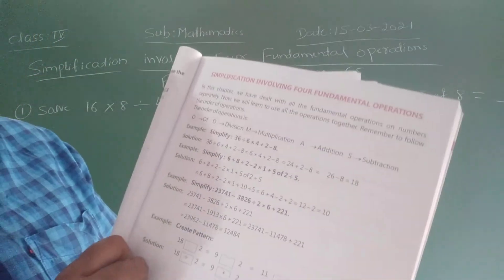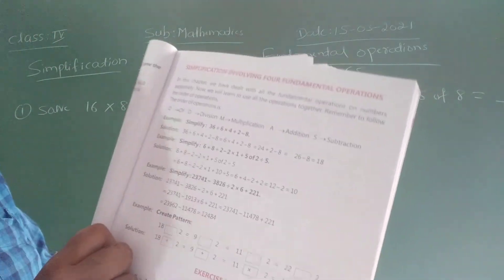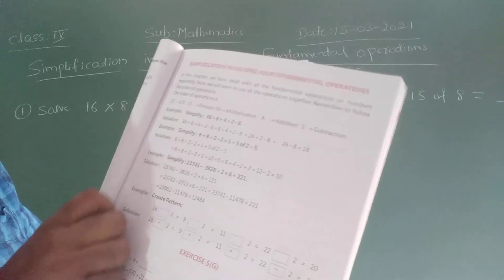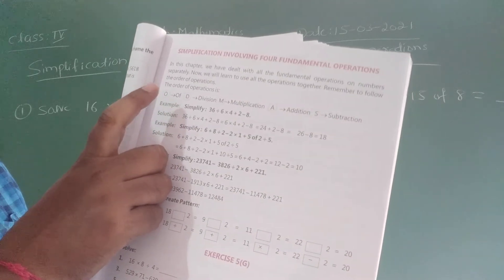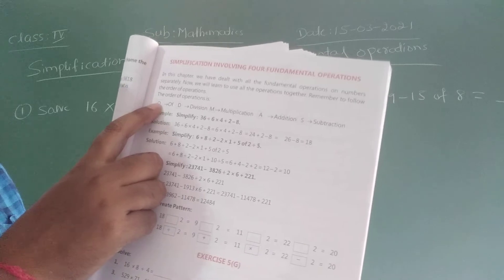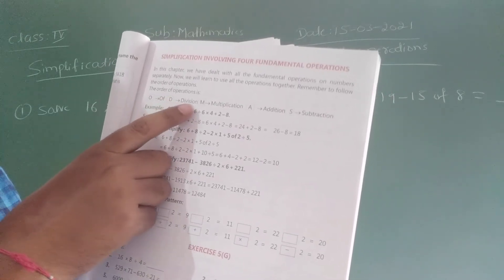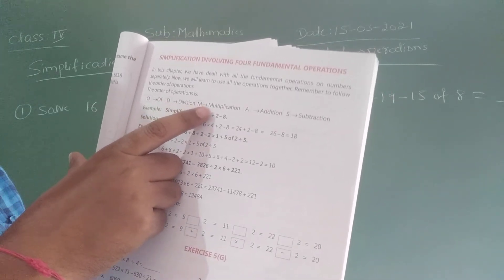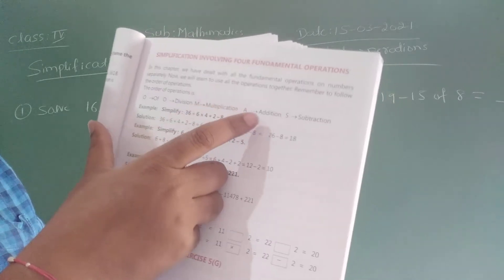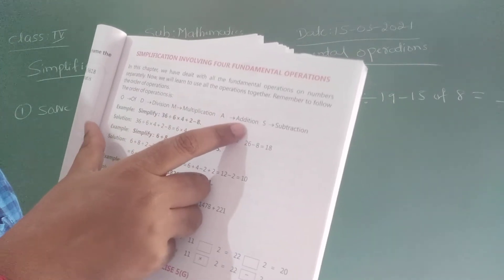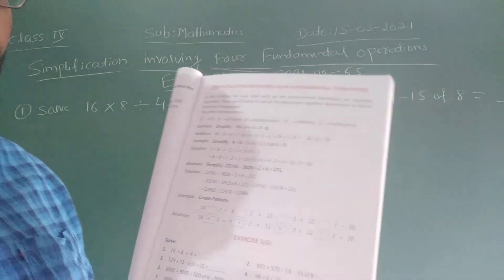So you have to maintain these operations in order. First you have to apply off. If off is not there, then you have to apply division. If division is not there, then multiplication. If multiplication is not there, then addition. If addition is not there, then subtraction.